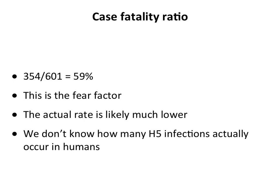The actual rate is probably much, much lower than this. We probably don't know how many people are infected, and the denominator is the important number. If the denominator is orders of magnitude bigger — which it likely is, since WHO is not the only organization that can detect H5 infections — then the fatality rate will be much lower.